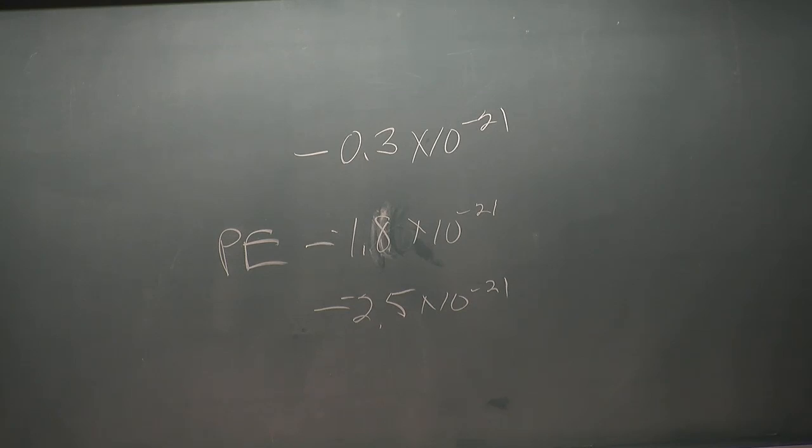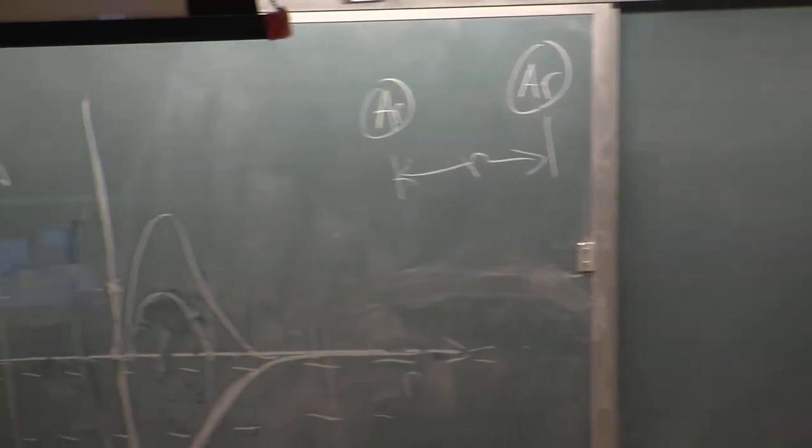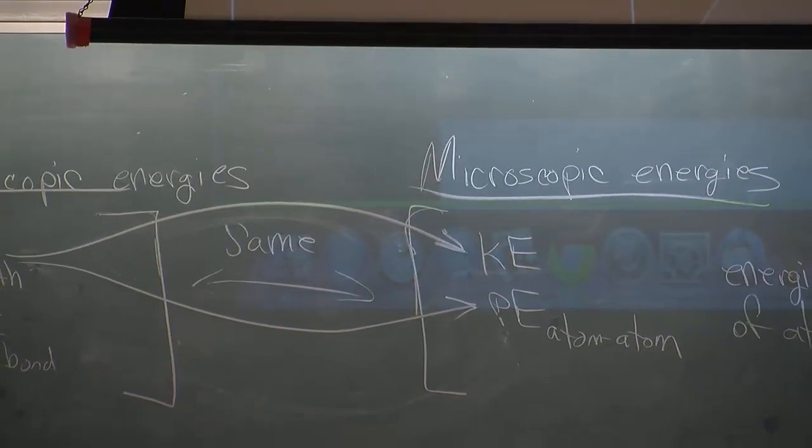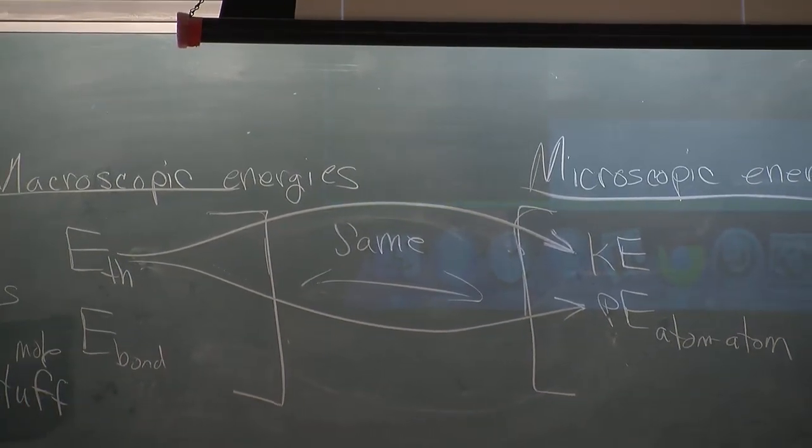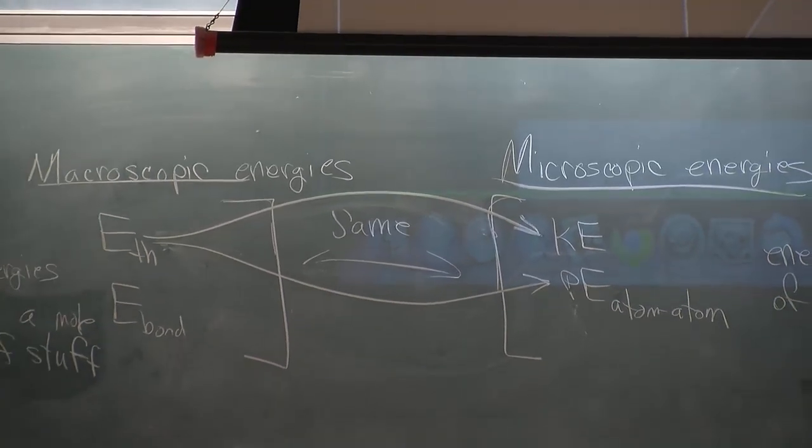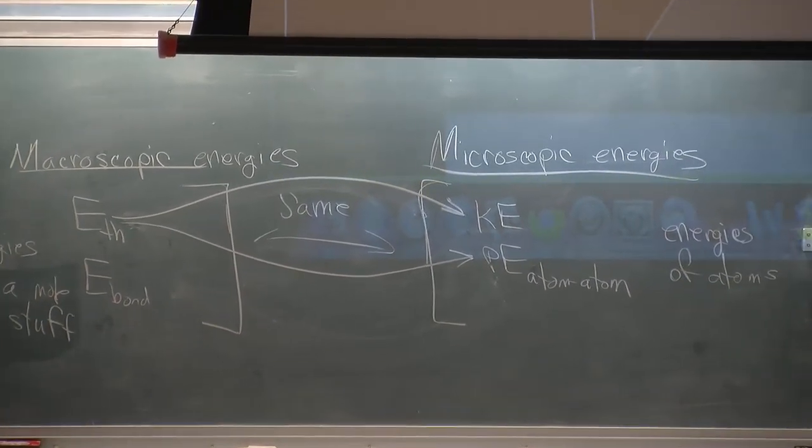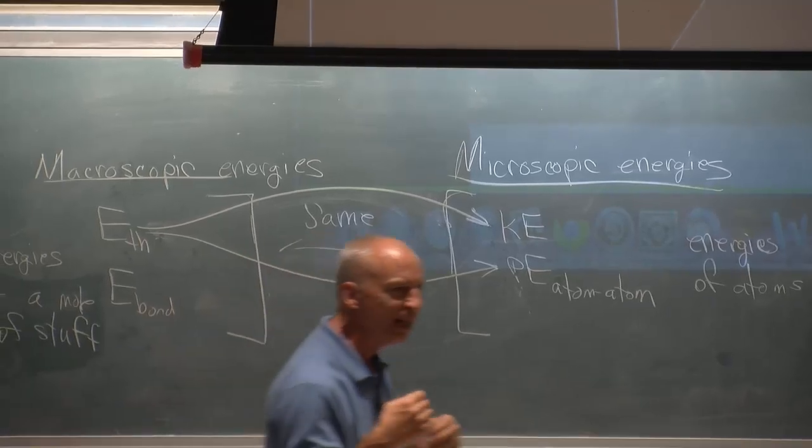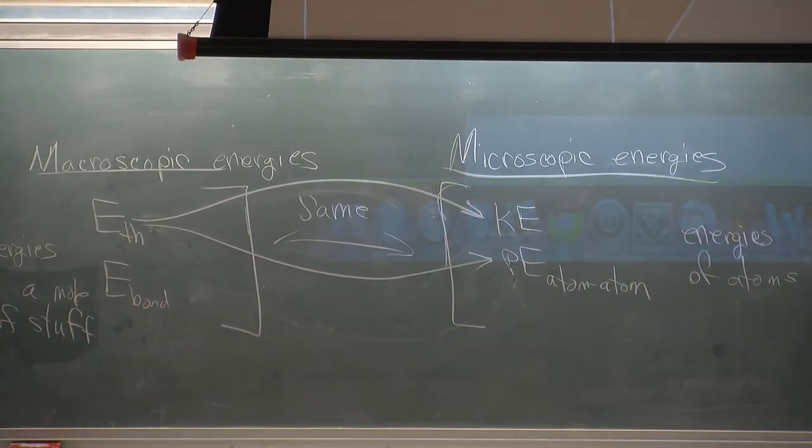That shows you something. It shows you that when you add thermal energy, you not only increase the kinetic energy, you not only make atoms move around faster, but if atoms are bonded together, which in our real world they're bonded all over the place, if atoms are bonded together then you're also increasing potential energy when you increase the thermal energy. The thermal energy is made up of both of those increases.